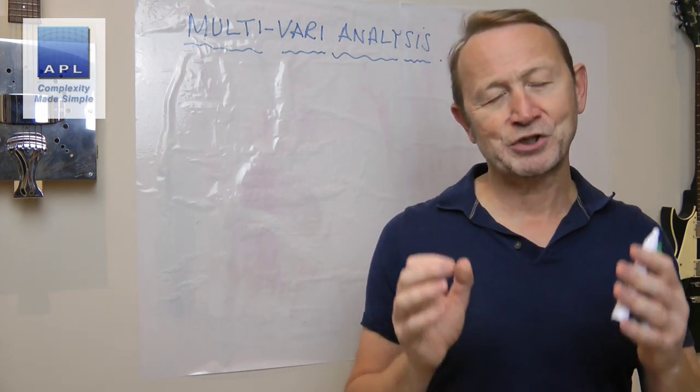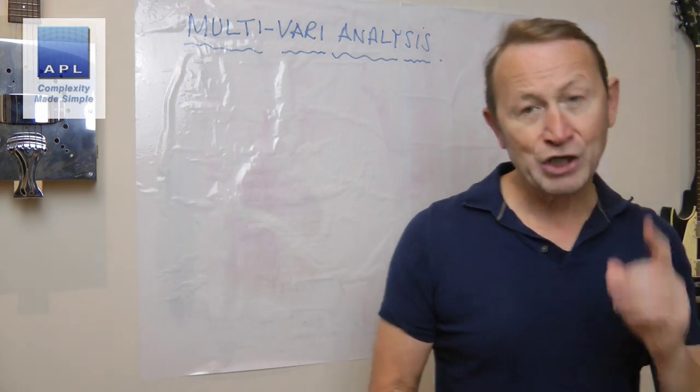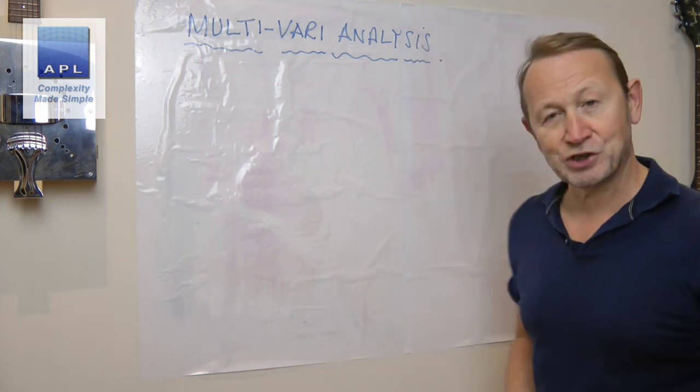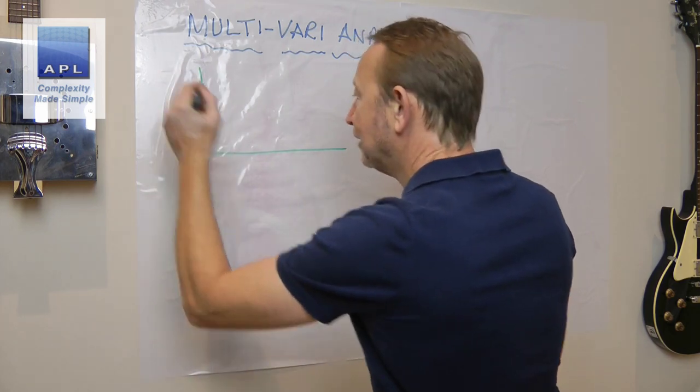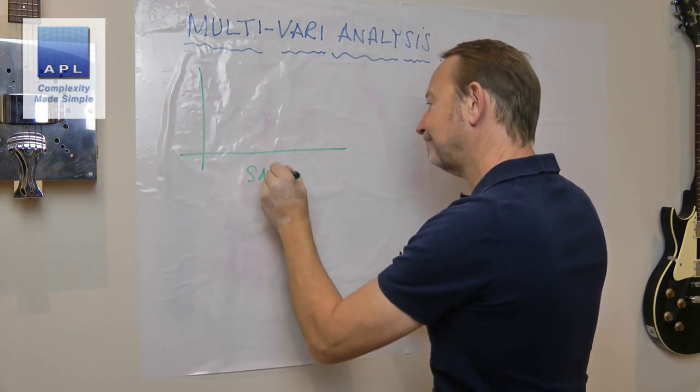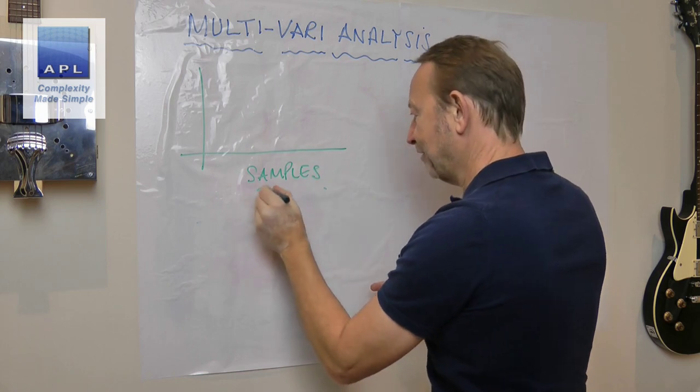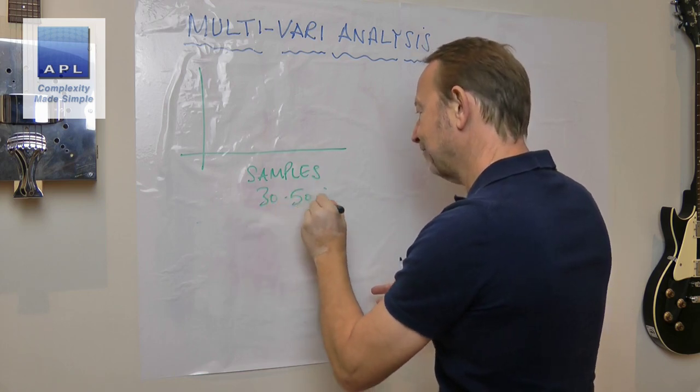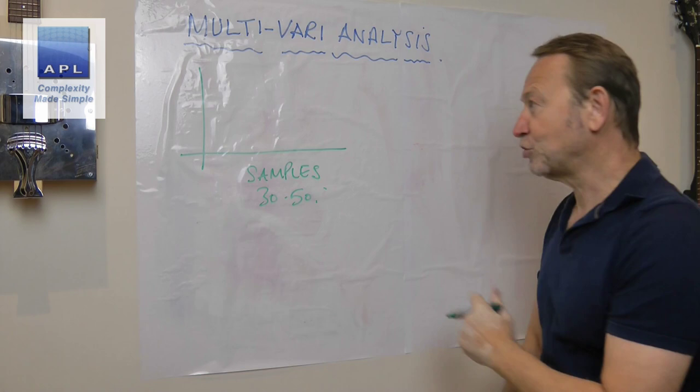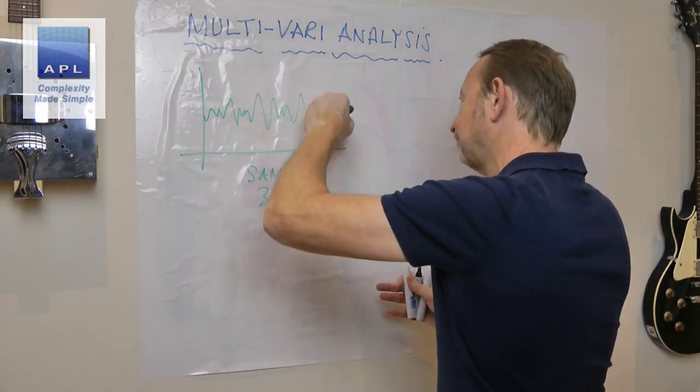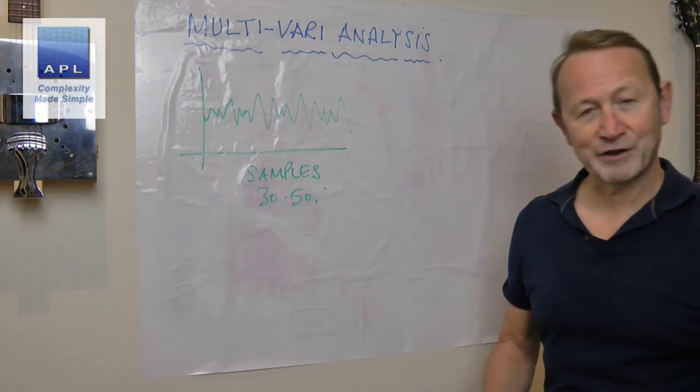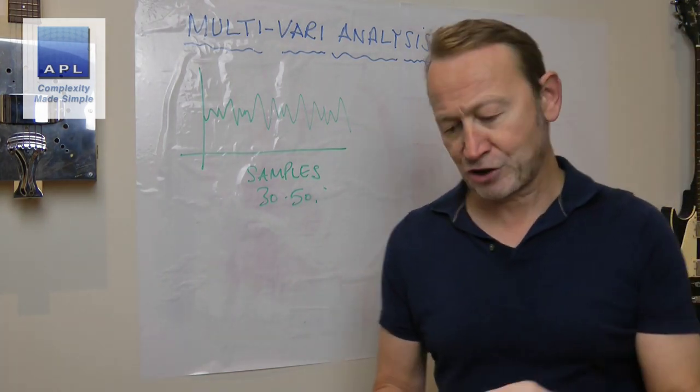Now usually what kind of analysis would you do? Well for weight, for instance, you just take some samples. Maybe I would recommend you know 30 to 50, we just plot a run chart, we just get some variability.